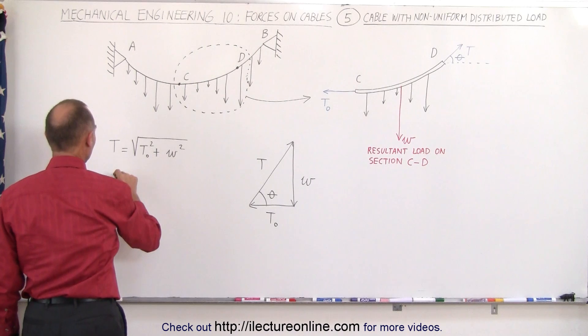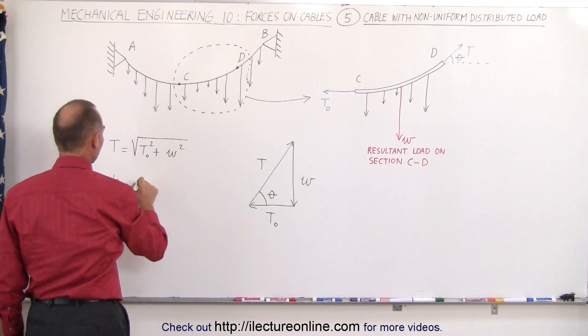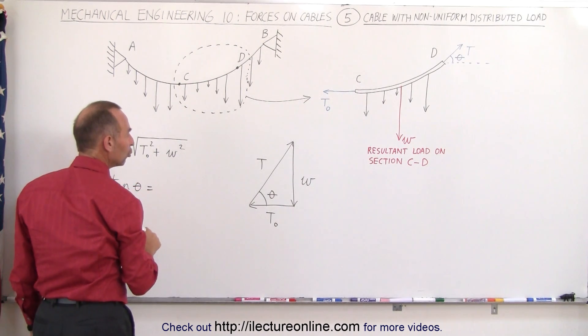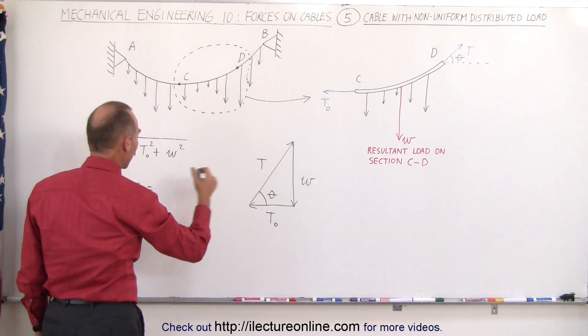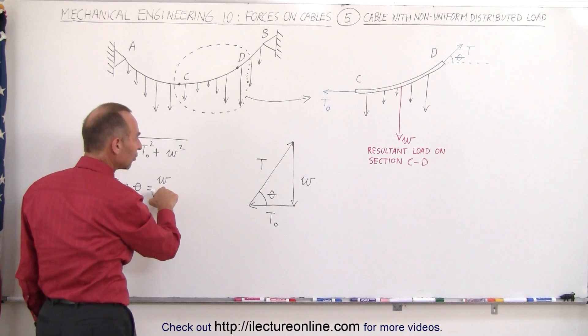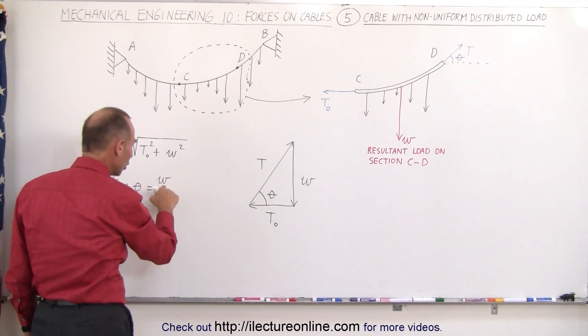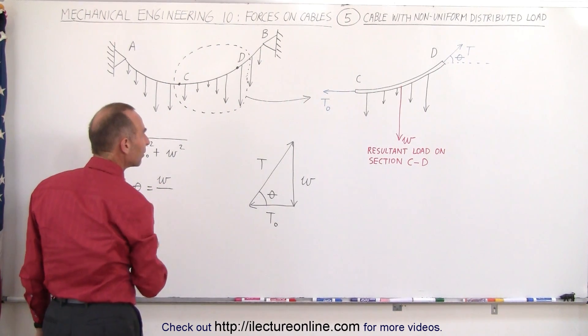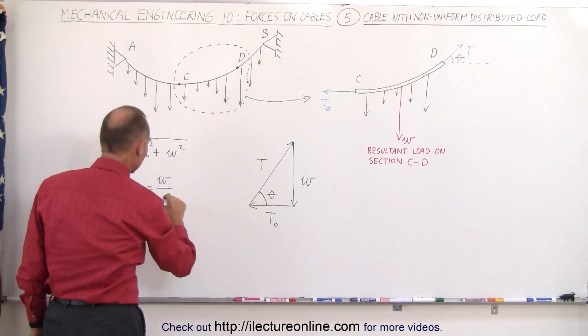We can also see that looking at this relationship here, the tangent of theta is equal to the ratio of the opposite side, which is the resultant load on the cable, divided by T sub naught.